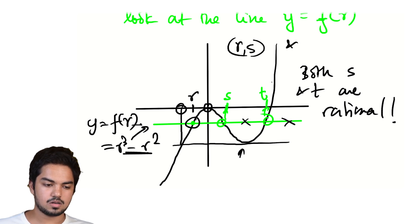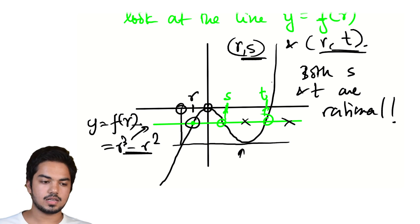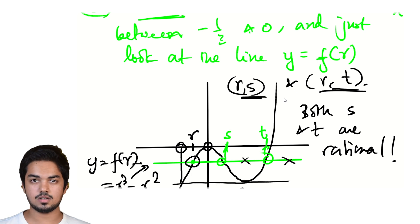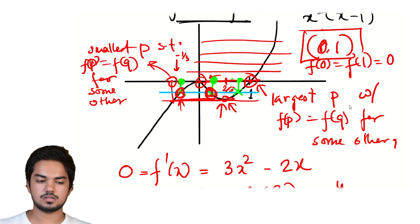(R, S) and (R, T) are rational good pairs. And since we could have chosen R to be any rational between -1/3 and 0, since there's infinitely many such rational numbers, we get infinitely many rational solutions. And that's it.